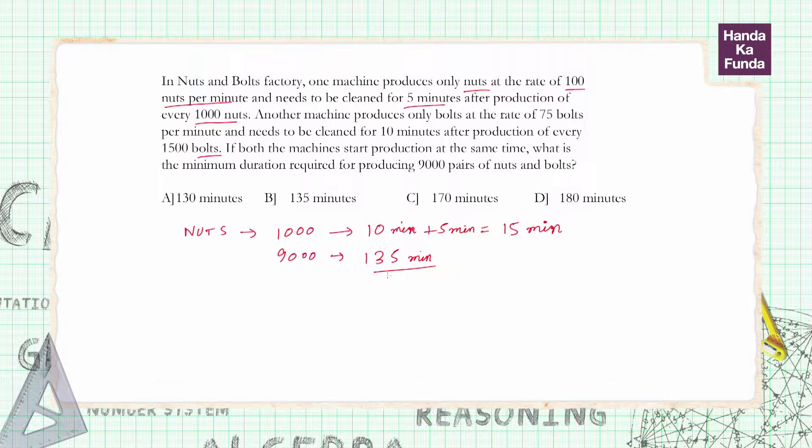That mistake is that the 5 minutes of cleaning is required before the machine can be used again. So once we have produced the nine thousandth bolt, do we need to clean it again? No.